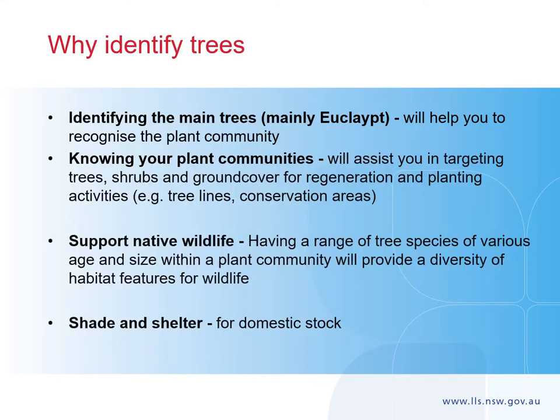Why identify trees? When people are looking to improve native vegetation on their property, it is usually by planting trees and shrubs or protecting existing vegetation. To make sure the correct trees and shrubs are planted, it is important to know what plant community type is there now or was originally present. Plant communities are groups of trees, shrubs, grasses and ground cover naturally found together, in specific geographic areas defined by soil type, rainfall and position in the landscape. Plant communities are often defined by dominant tree species such as eucalypts.